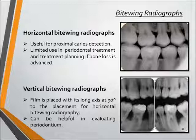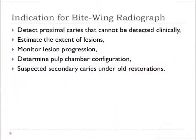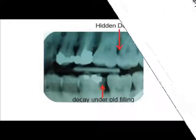The vertical bitewing radiograph has the film placed with its long axis at 90 degrees to the placement of the horizontal bitewing radiograph and can be useful in evaluating the periodontium. Bitewing radiographs are used for detection of proximal caries that cannot be detected clinically, to estimate the extent of the lesion, monitor lesion progression, and determine pulp chamber configuration.